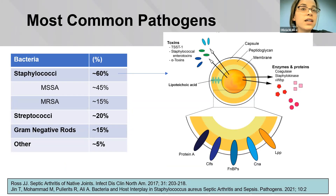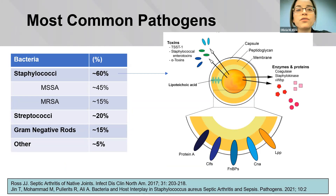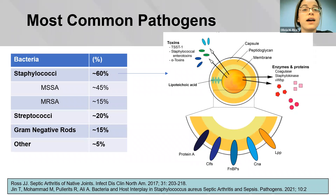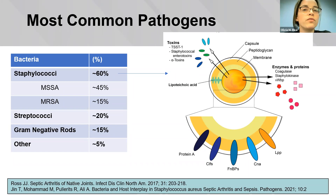Common things being common: staph aureus accounts for about 60 to 70% of septic arthritis cases and has been shown to cause more severe infection than other microbes. Once inside, the bacteria employ different virulence factors, attaching to host tissue and proliferating while the host immune system responds. Contamination of joint aspirate cultures does happen, but is most likely due to coagulase-negative staph, which is a ubiquitous skin microbe but rarely causes septic arthritis, because it lacks the required virulence factors that staph aureus possesses to induce infection within the joint.